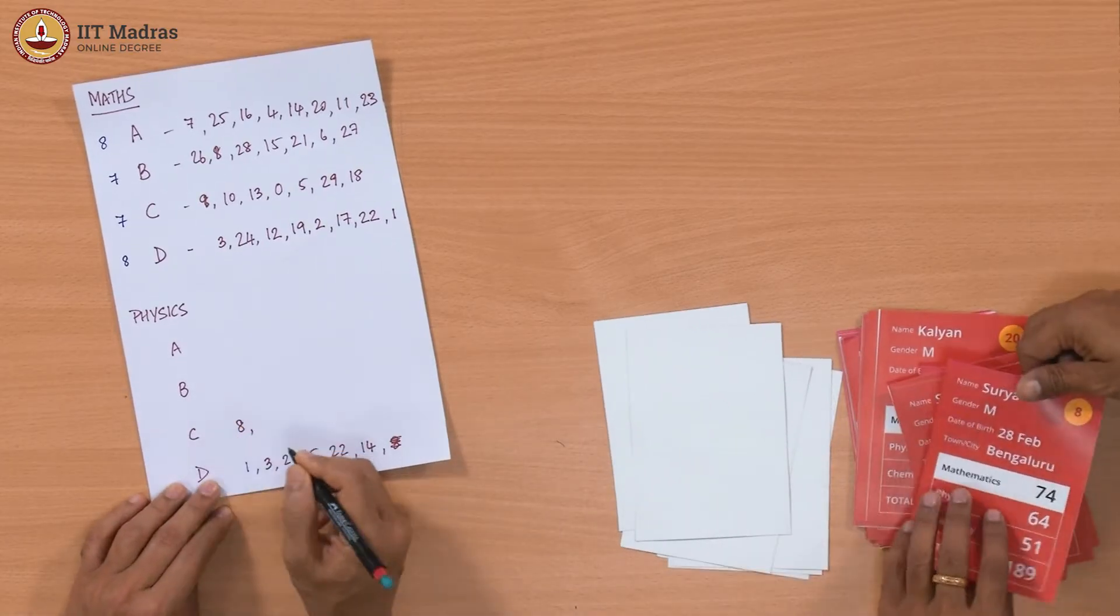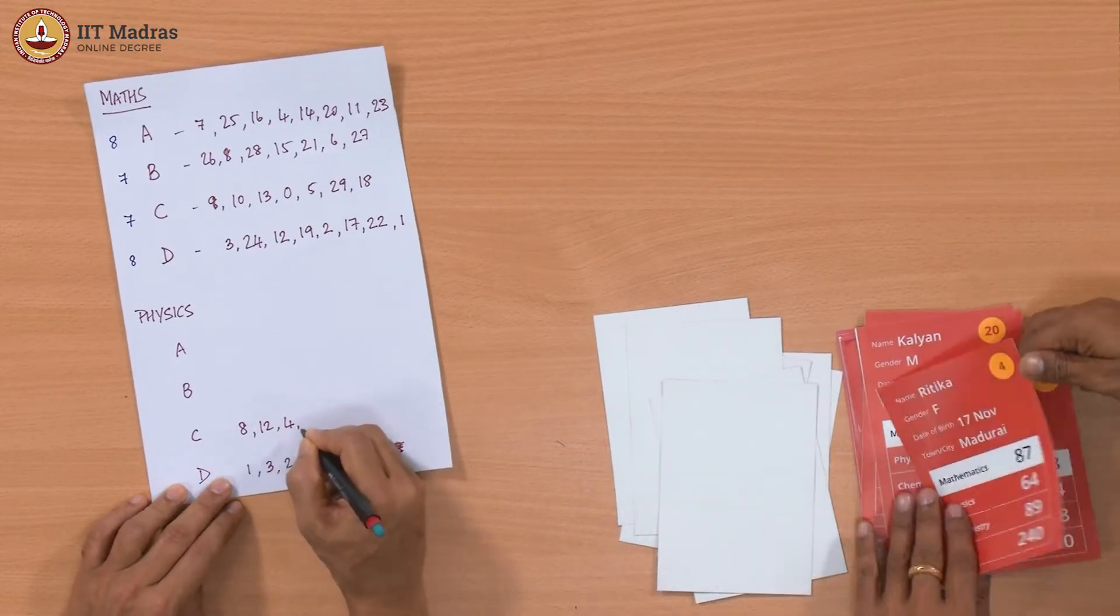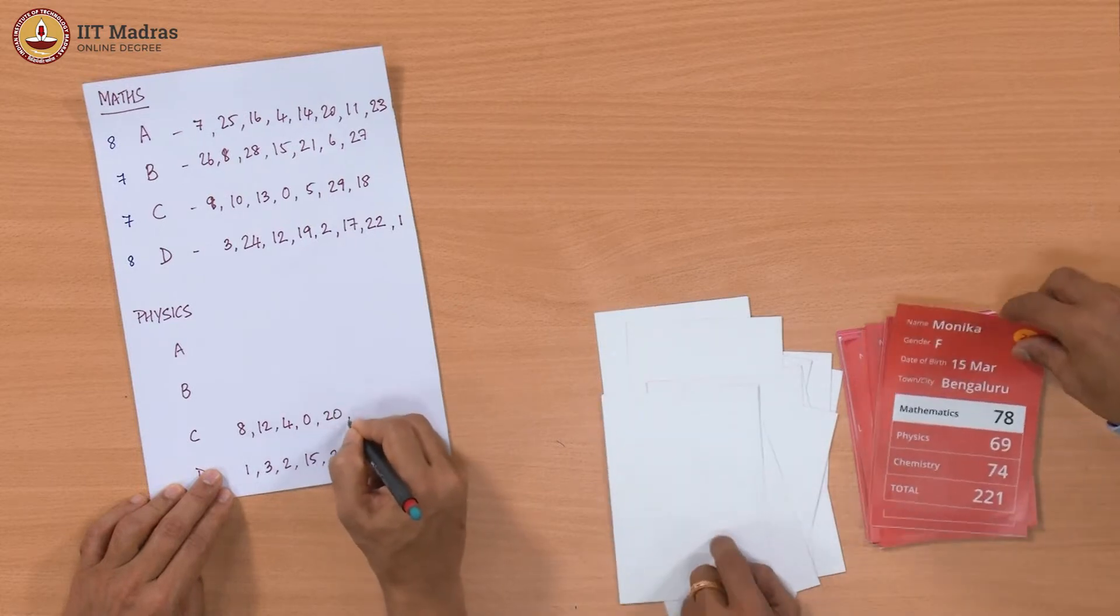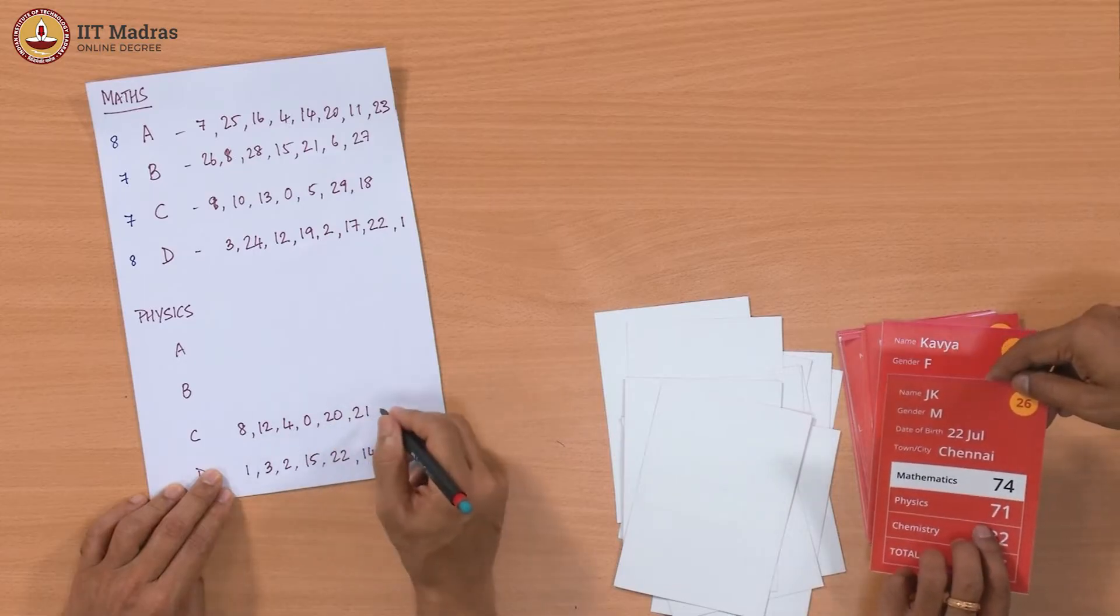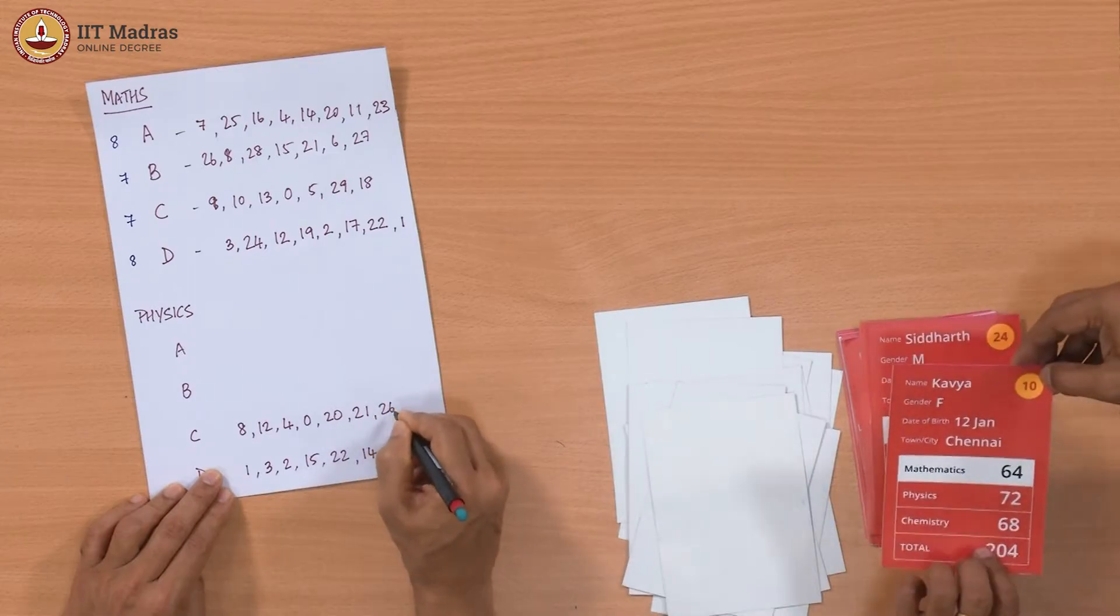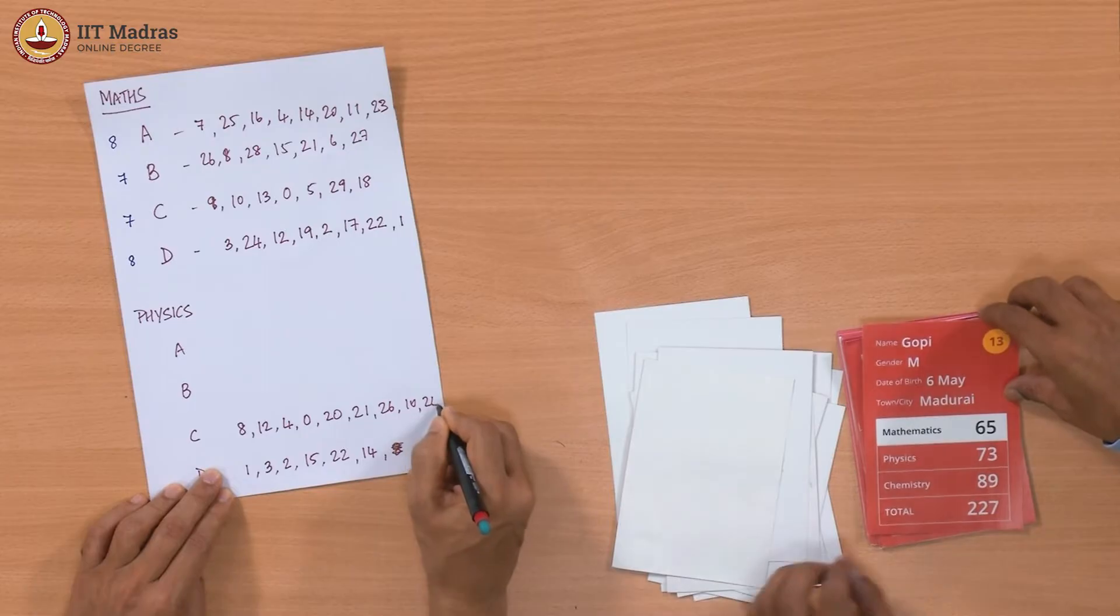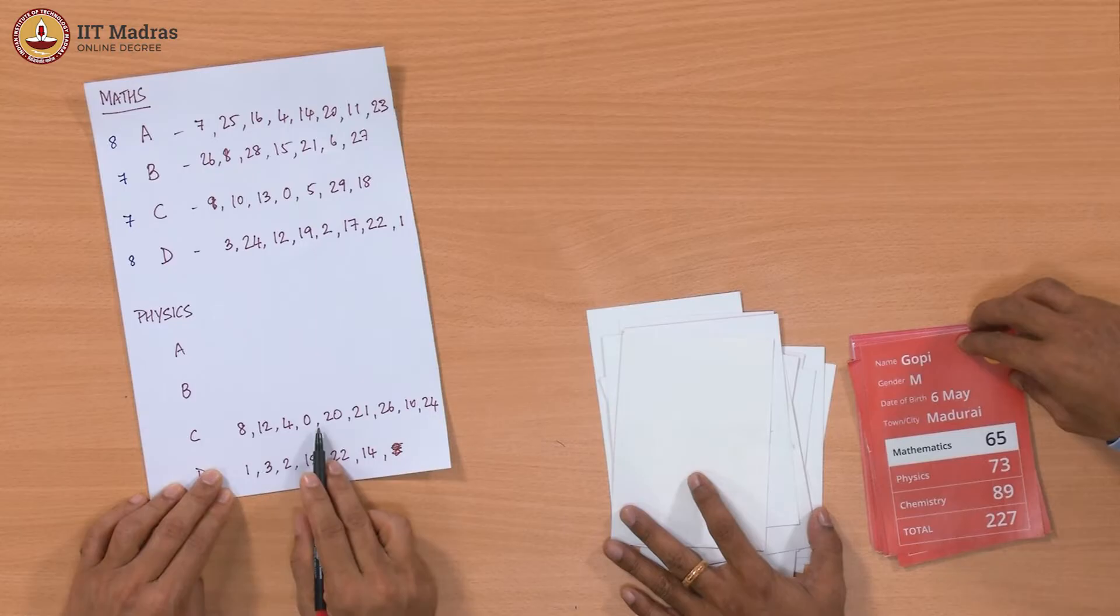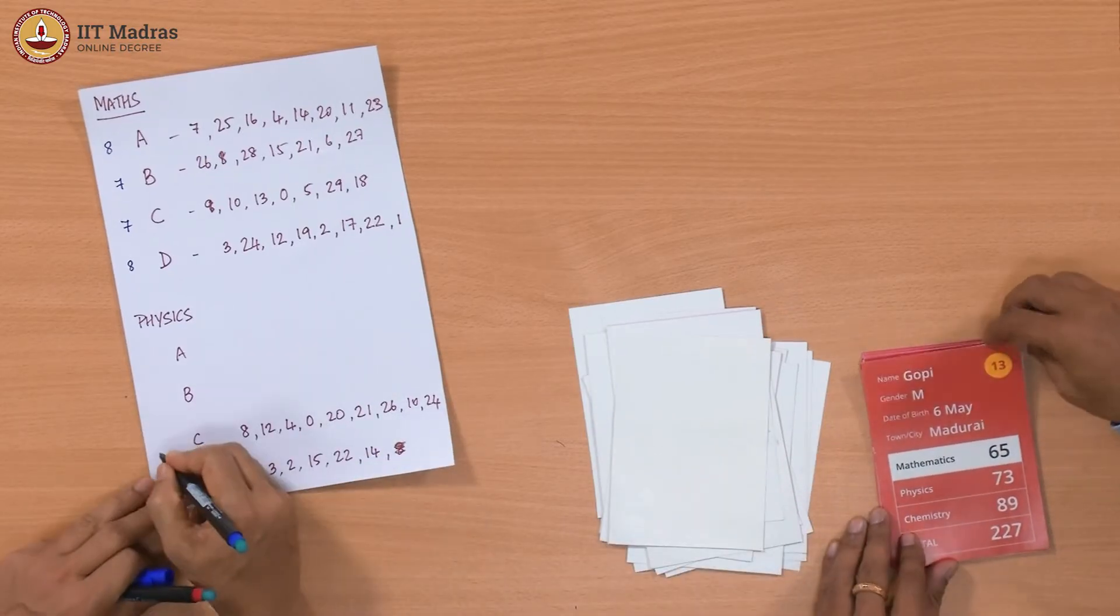So we come up to C: 8, 12, 4, 0, 20, 21. How many have you got? 6. Then 26, 10, 24. So maybe we will stop with that. We have 6 in the last and we have here 9, so that is 15. That is the bottom half. Good. All right. That is good.